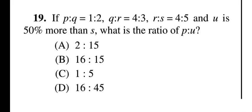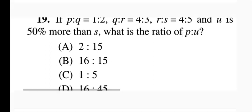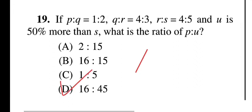Question nineteen is a mathematical problem. If P:Q = 1:2, Q:R = 4:3, R:S = 4:5, and U is 50% more than S, what is the ratio P:U? Options: 2:15, 16:15, 1:5, 16:45. Question nineteen, option D is correct: 16:45. Try solving this yourself to verify the answer.